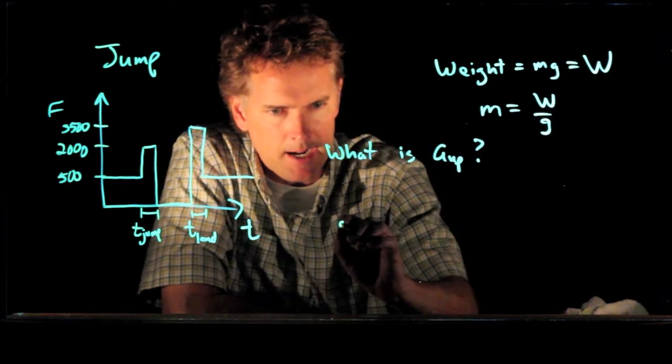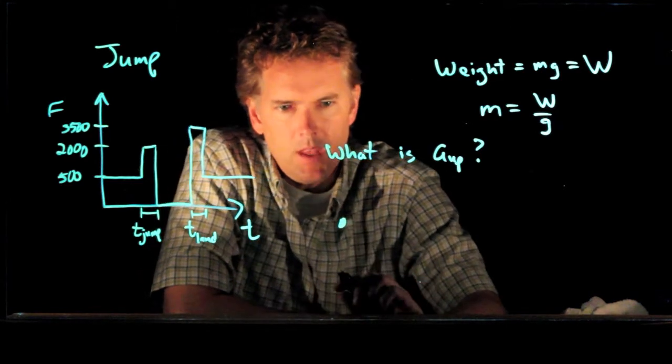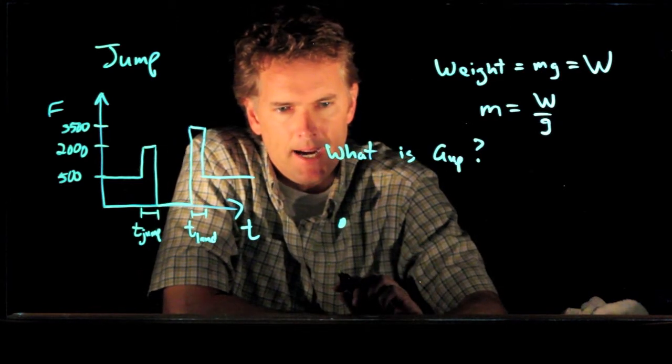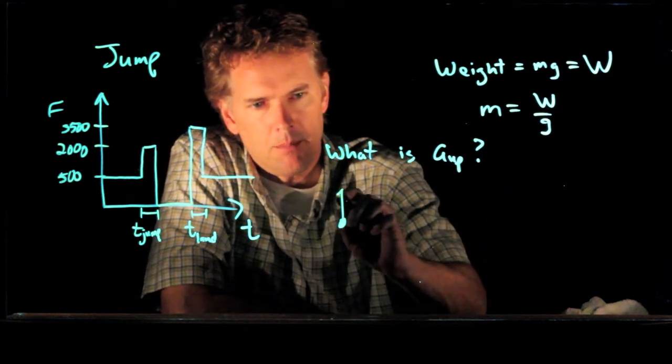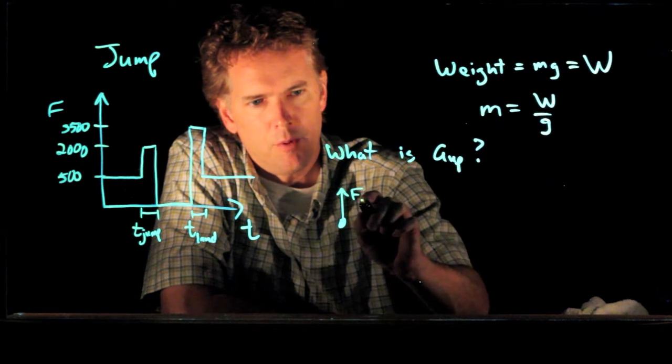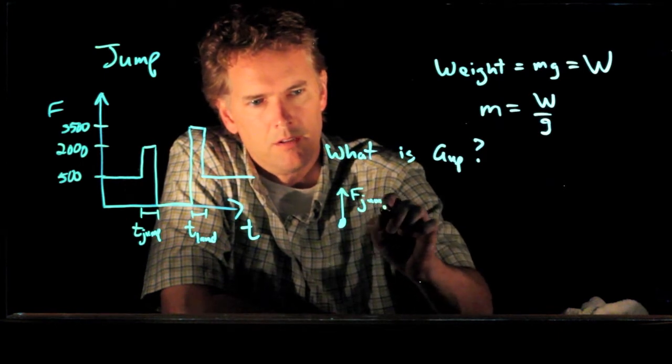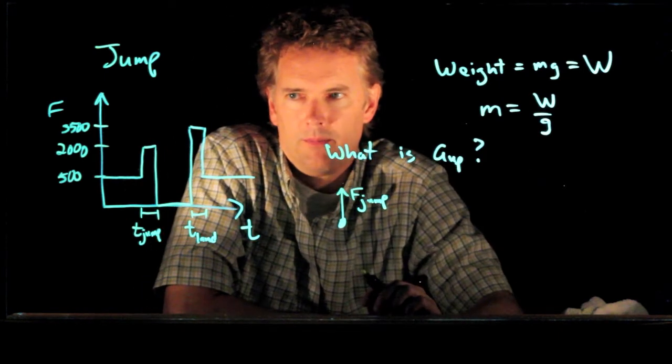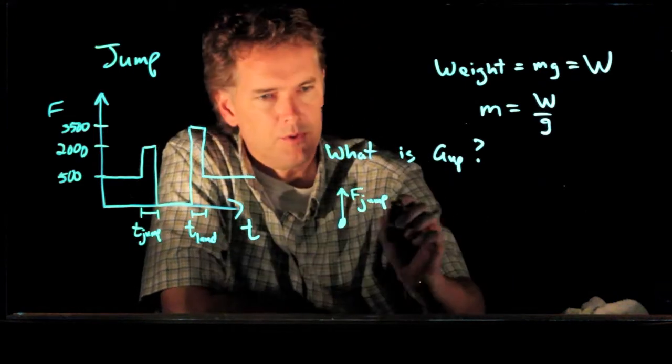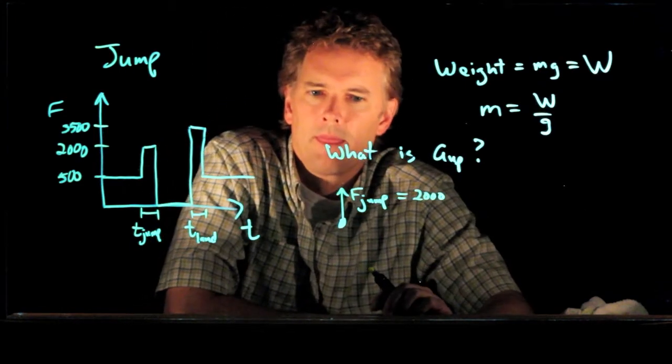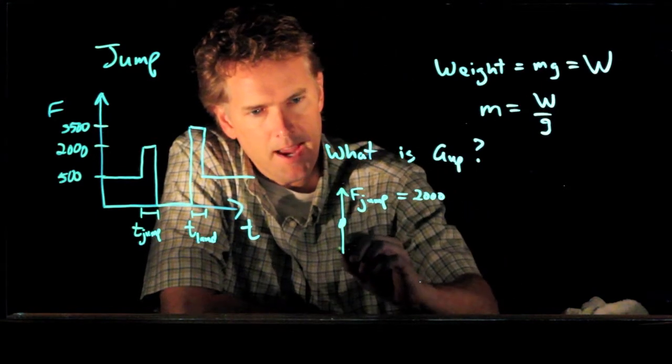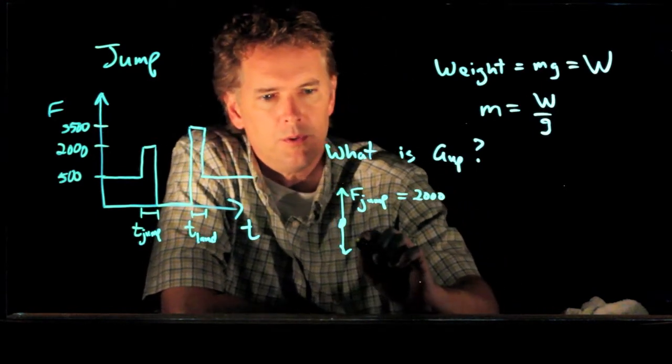Well, let's go to our free body diagram. If we think about the free body diagram, then when they are pushing themselves up off the ground, there is a force of jump, which is equal to, in this case, 2,000 newtons. But there is also a force down, which is equal to their weight.